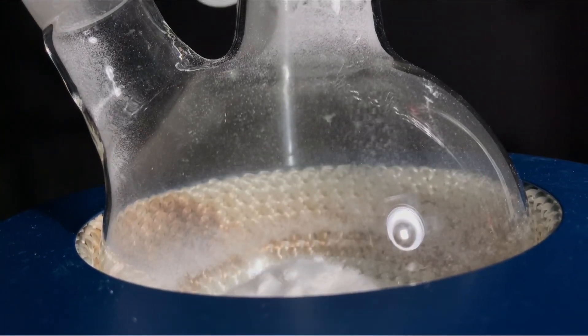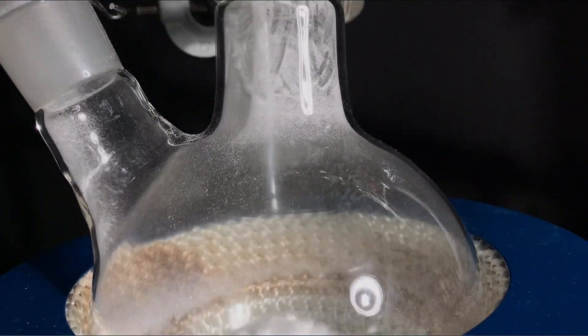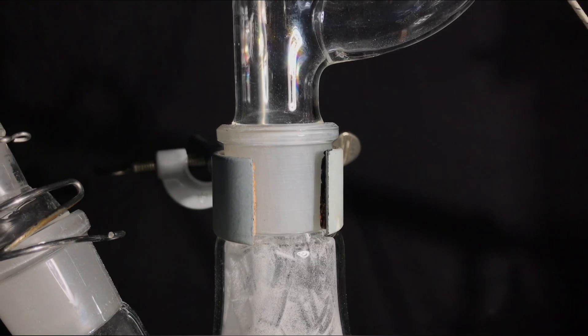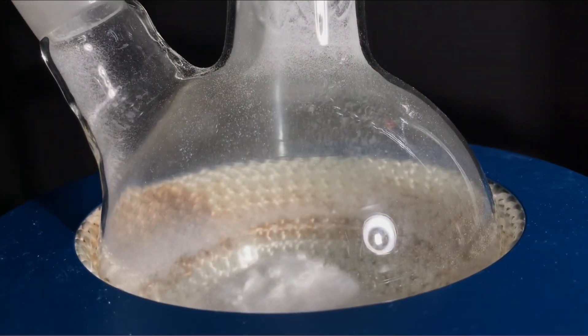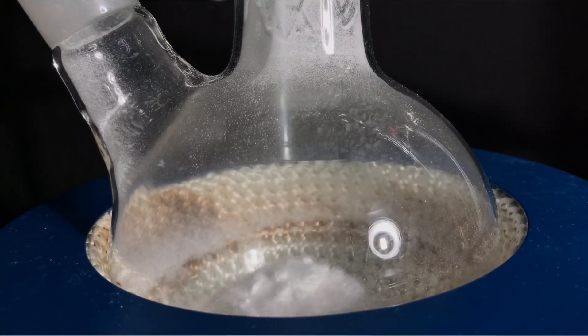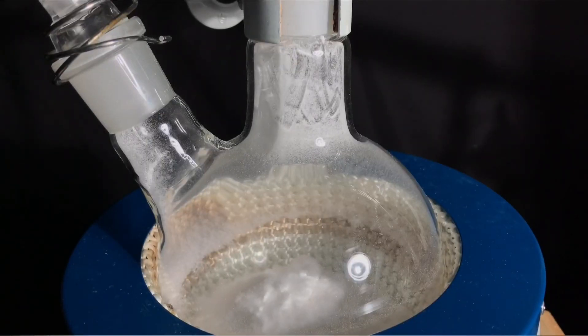As it turns out, salicylic acid starts to sublime at 76 degrees celsius. At around 200 degrees celsius it starts to decompose. Because the flask isn't hot enough yet, the snowflakes are made from salicylic acid.